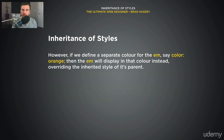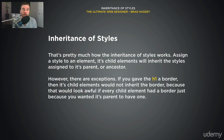However, if we define a separate color for the em, say color orange, then the em will display orange rather than blue, overriding the inherited style of the parent. That's pretty much how the inheritance of style works — you assign a style to an element and the child elements will inherit those styles.